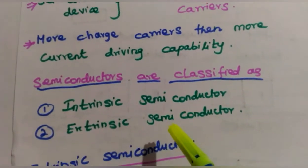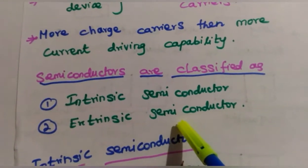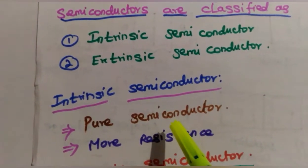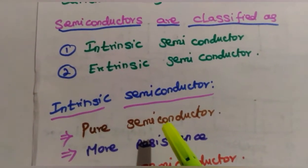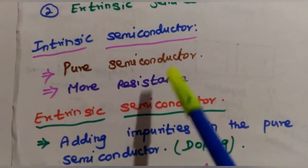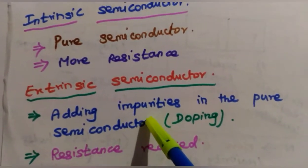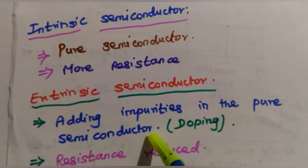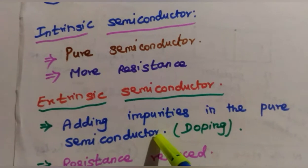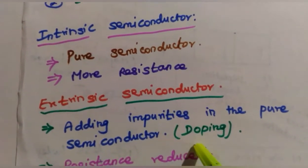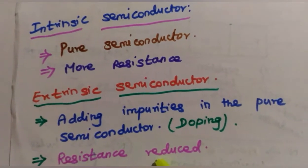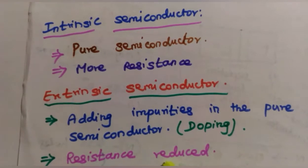Semiconductor devices are normally classified as intrinsic semiconductors and extrinsic semiconductors. Intrinsic semiconductor means the pure form of semiconductor — it does not have any impurities, so its resistance is more. Extrinsic semiconductor means we add some impurities into the pure semiconductor, which is called doping. Adding impurities increases charge carriers, so resistance is reduced and current flow is more.